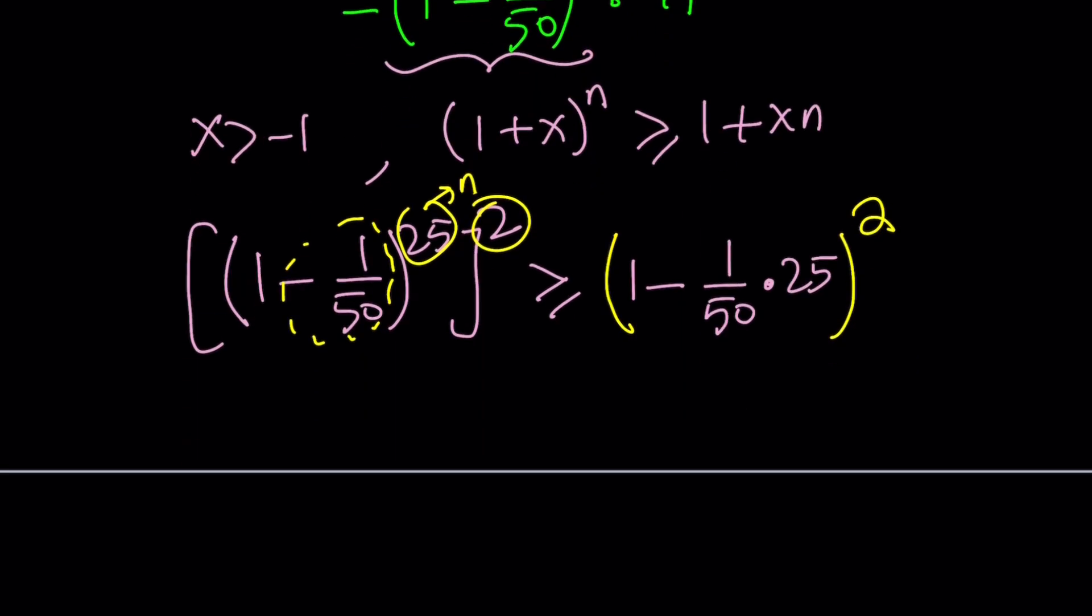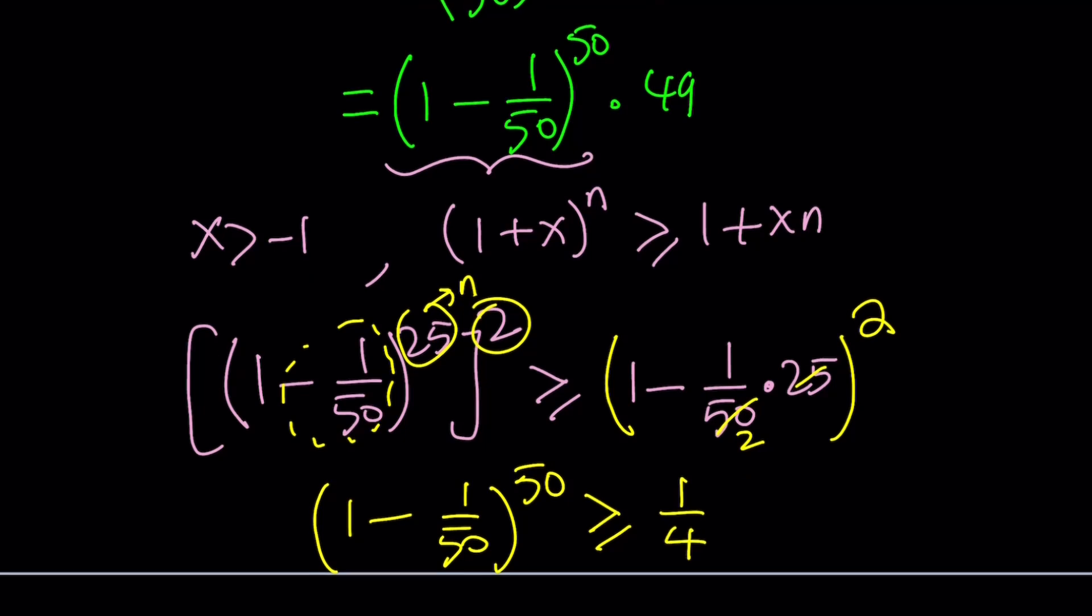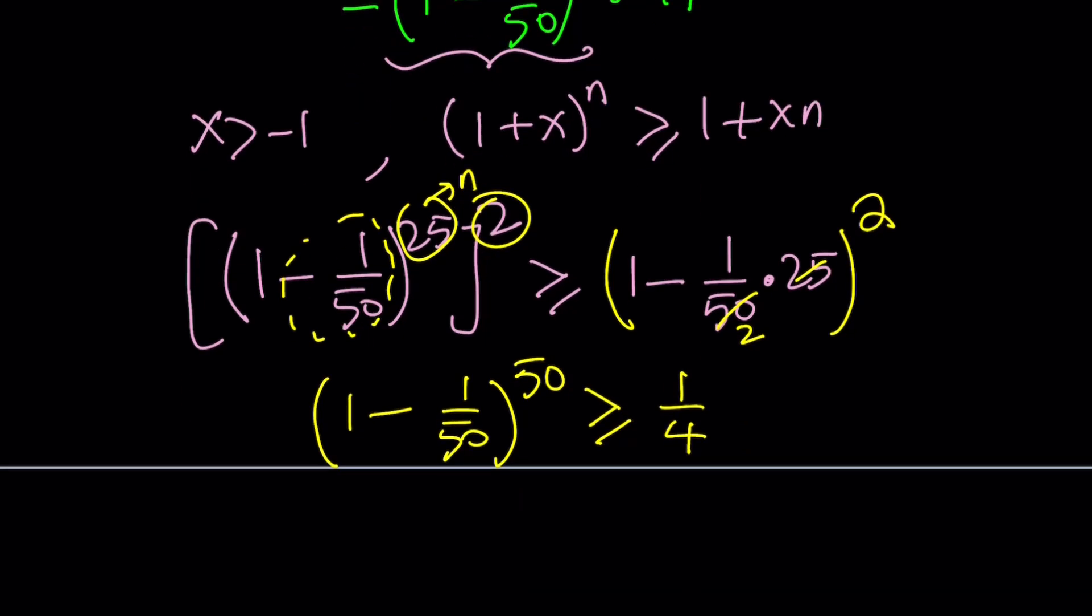Now my expression is greater than or equal to that. In other words, we have 1 minus 1 over 50 to the 50th power is greater than or equal to, and if you simplify this expression, you get 1 minus 1 half to the 2nd power, which is 1 fourth.